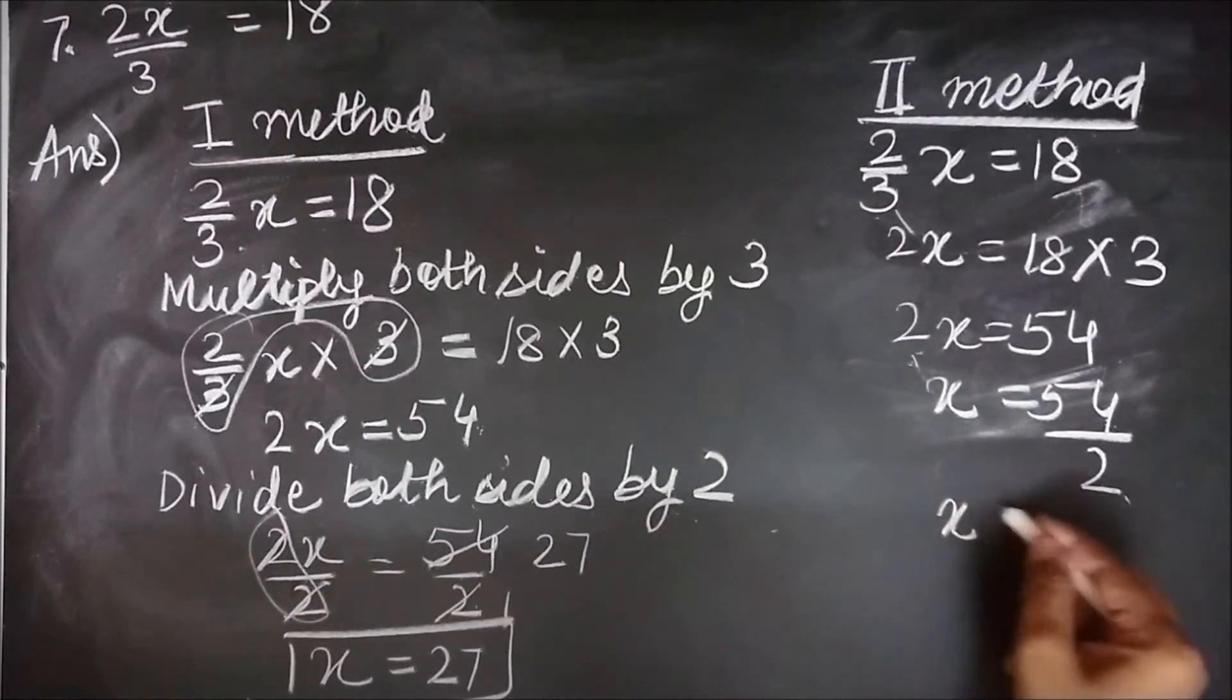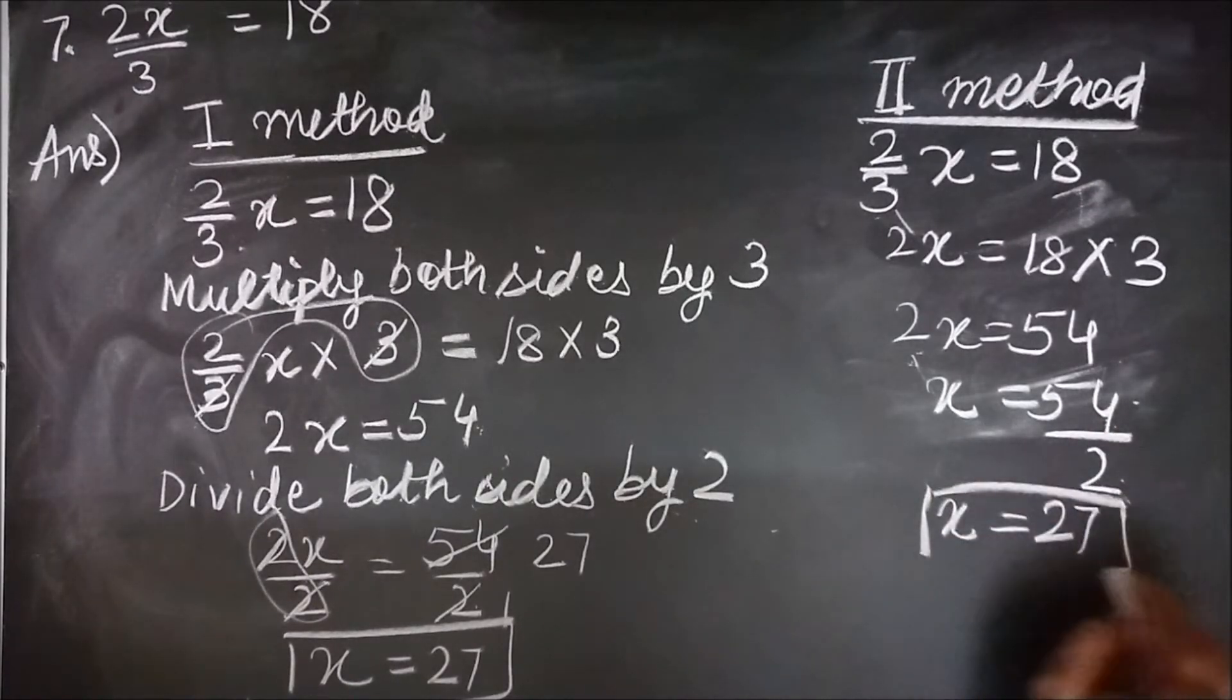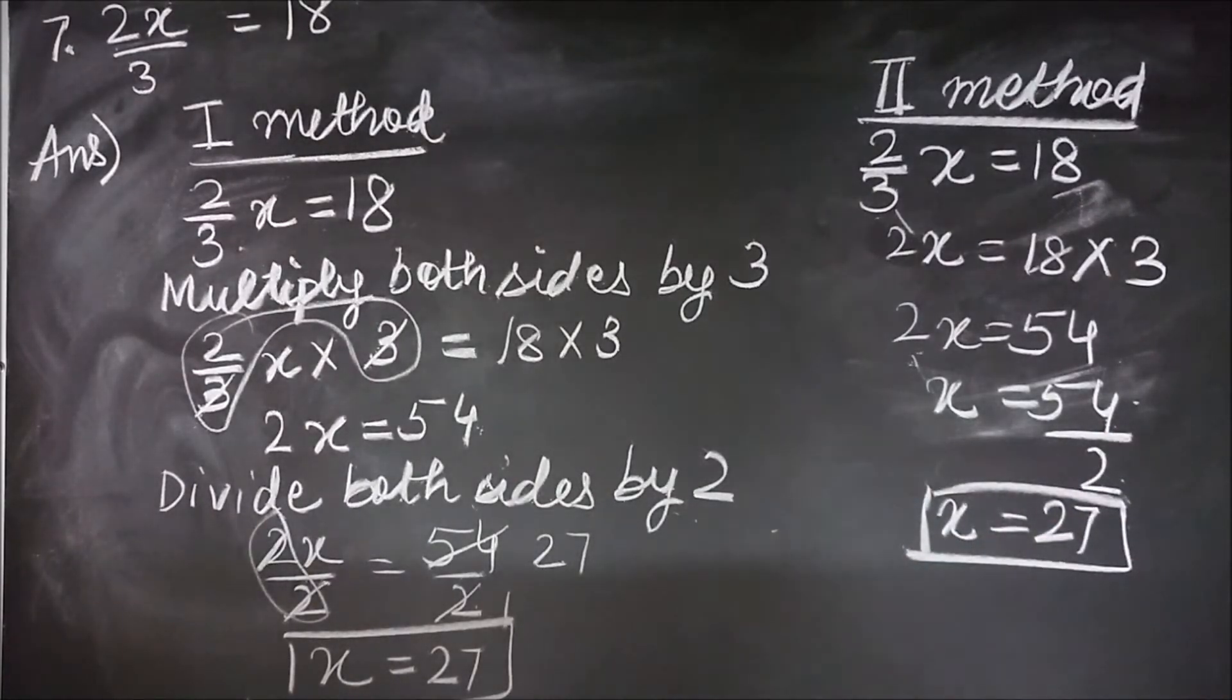So x equal to 27. As you perform the cancellations, this is the solution you are going to get. Let us check if our solution is correct.